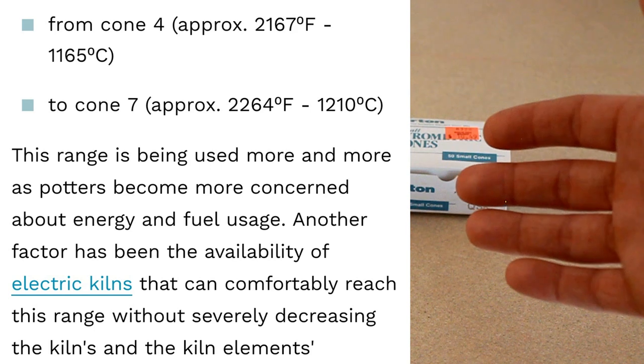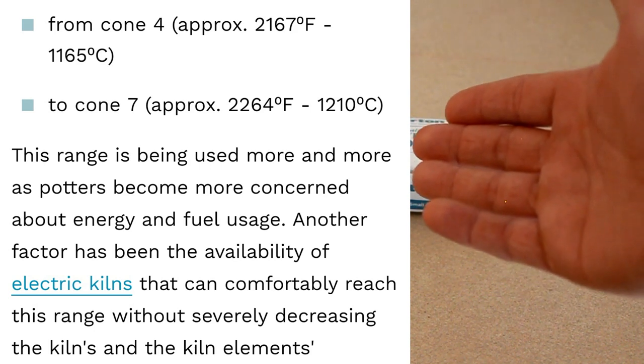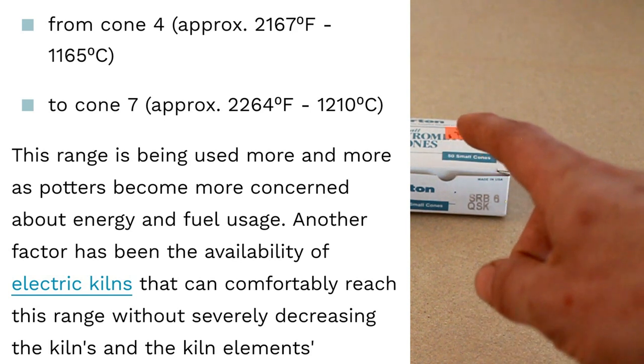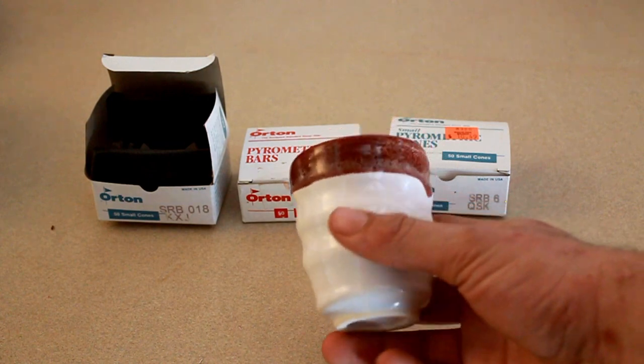And then we have the mid-fire range stuff. This is anywhere from cone 4, which is around 2167 degrees, to cone 7, which is 2264 degrees, both Fahrenheit. Now this is where I do a lot of my pottery.